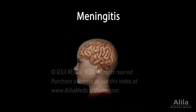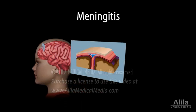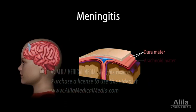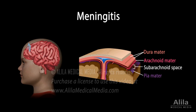Meningitis is inflammation of the meninges, the membranes that enclose the brain and spinal cord. The meninges consists of three layers: dura, arachnoid, and pia mater. Between the arachnoid and pia mater is the subarachnoid space containing blood vessels that supply the brain.